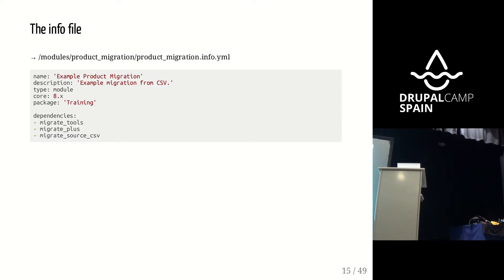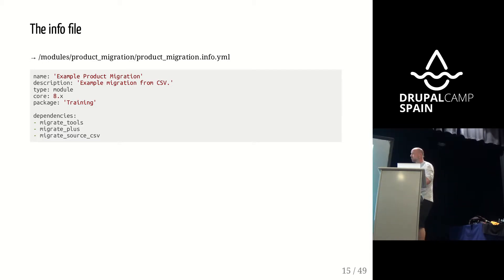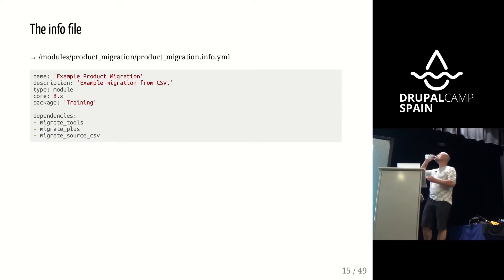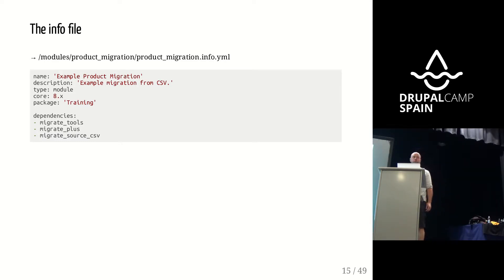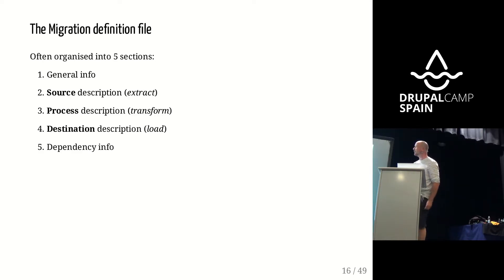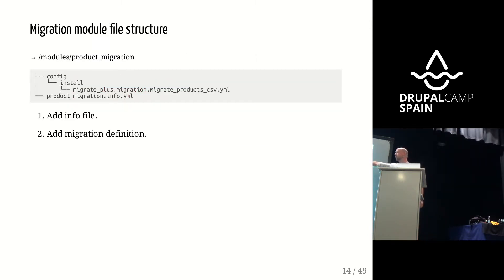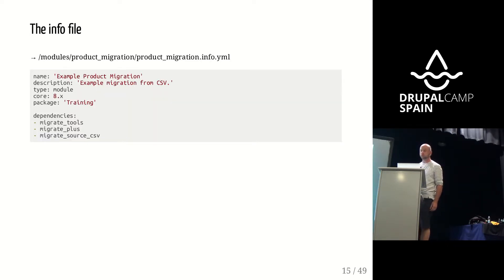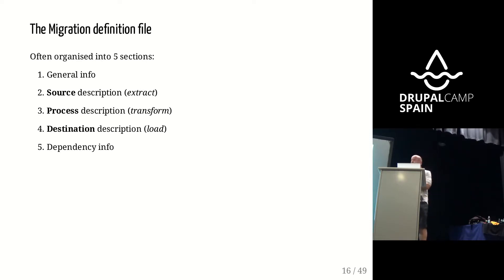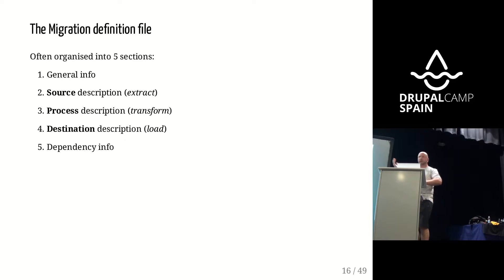The basic info file — which everyone who's ever written a Drupal 8 module should be familiar with — has a name, description, and it depends on three modules. The migration definition is that migrate_plus.migration YAML file which goes in config/install. As with YAML, the order in which you put all the configuration values doesn't really matter. Generally though, if you look at migrations other people have written, they tend to follow a structure separated into five sections.